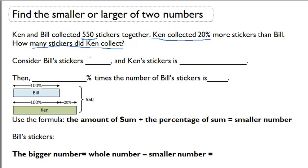Let's consider Bill's stickers to be 100%, which makes Ken's stickers 100% plus 20% more, which makes his 120%.